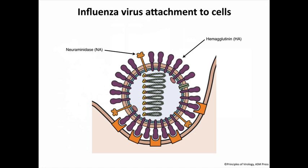Now let's look at an envelope virus: influenza virus. This virus has a helical nucleocapsid with RNA-protein complexes inside, wrapped in a membrane. Embedded in the membrane are two spikes: hemagglutinin, shown in purple, and neuraminidase in orange. The hemagglutinin is the receptor-binding glycoprotein. For envelope viruses, it's conceptually easier to see how they attach to receptors — you have these glycoproteins sticking out, and that's one of the main functions of these spike glycoproteins. The hemagglutinin mediates attachment to cellular receptors, and the membrane starts to bend in anticipation of the virus getting into the cell.